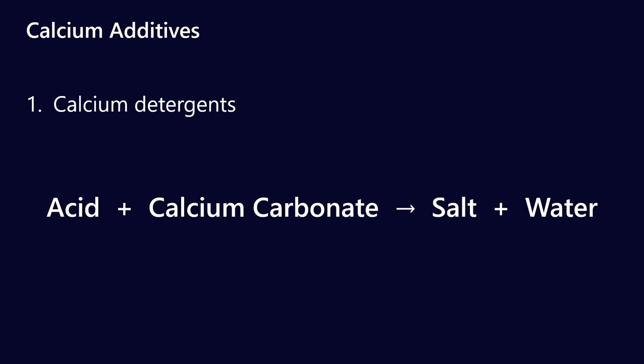Now on top of that we've also got what we might call calcium TBN additives. So the difference between a detergent and a TBN additive is not that huge. Sometimes you'll hear TBN additives referred to as over-based detergents. What that effectively means is if I had a calcium hydroxide or a calcium carbonate as my base to make a calcium detergent, the reaction that we're showing here is what we call stoichiometric. That is, there are the correct proportions of acid and calcium carbonate that you'll only produce salt and water.